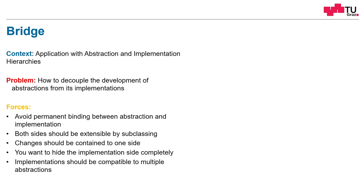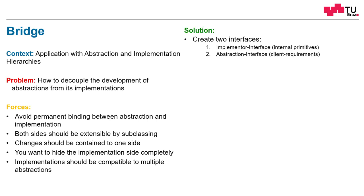The implementation should be compatible with multiple abstractions. Especially on Linux this is very visible: if you have different window managers, they all look differently but use the underlying graphical primitives in the background. The solution is to create two interfaces: firstly, the implementer interface — these are the internal primitives, the basics — and an abstraction interface, which covers the client requirements. This is the interface the client has to work with, so it should cope with the client requirements. Then we have to implement those interfaces with individual classes.